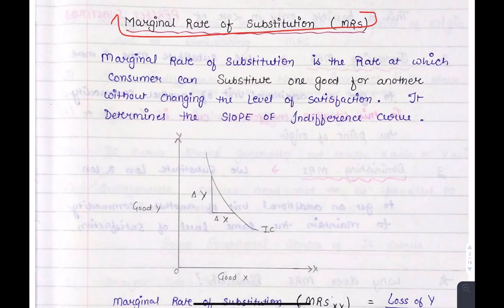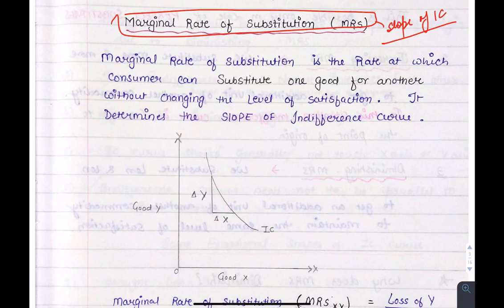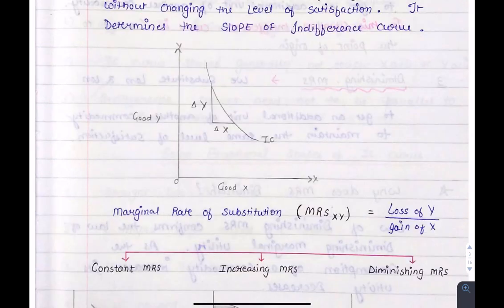Now let's look at the marginal rate of substitution, which is very important. MRS is shown by the slope of the IC curve. It is the rate at which the consumer will substitute one good for another good without changing the level of satisfaction. The diagram shows how many units of Y the consumer is ready to leave so that they can increase X.